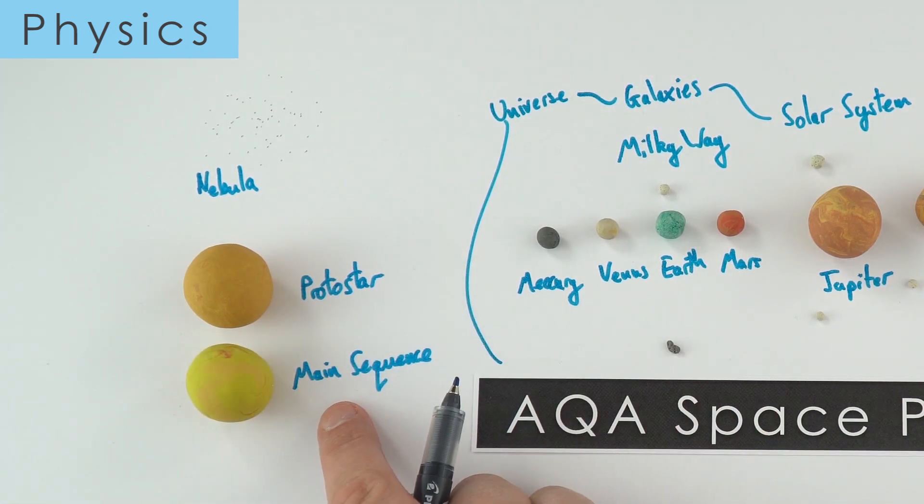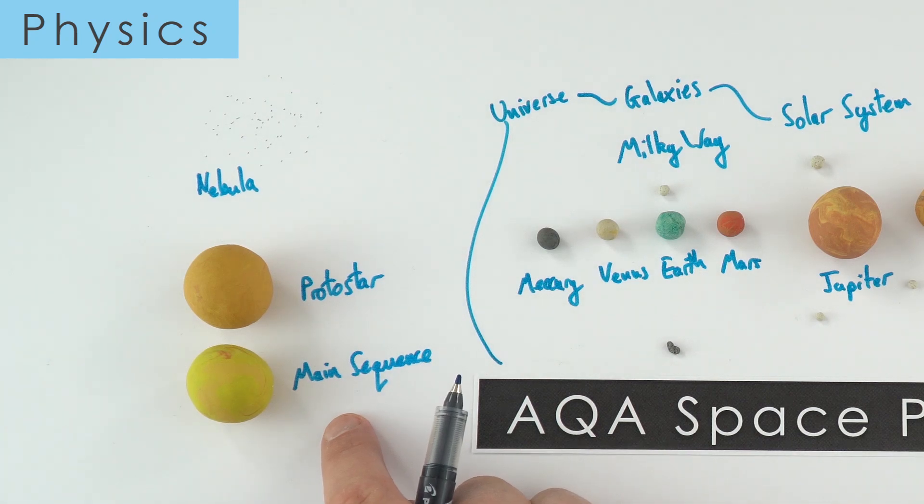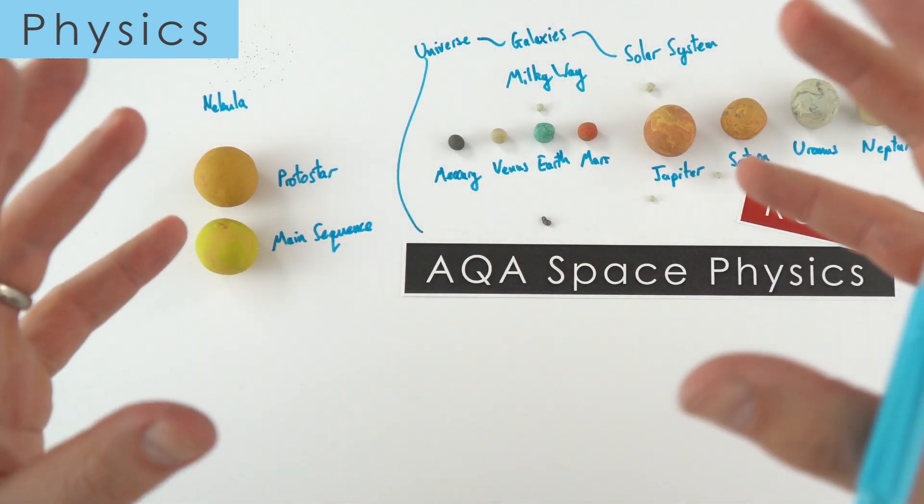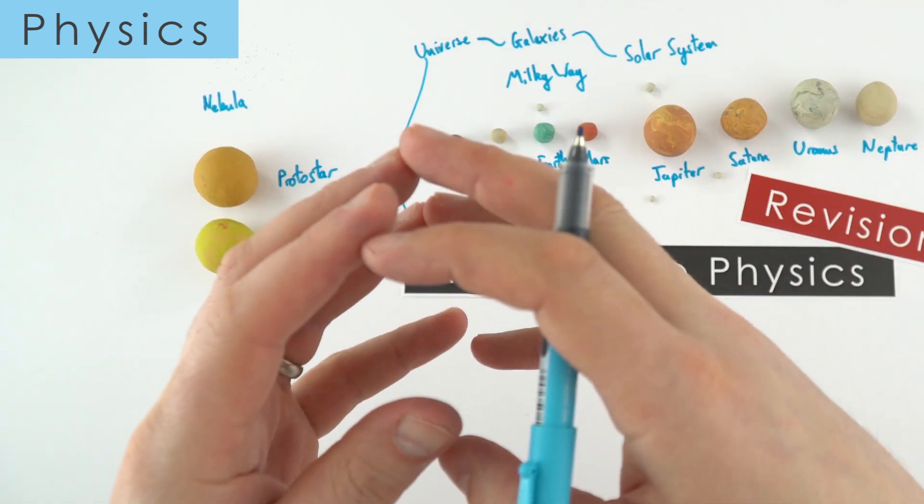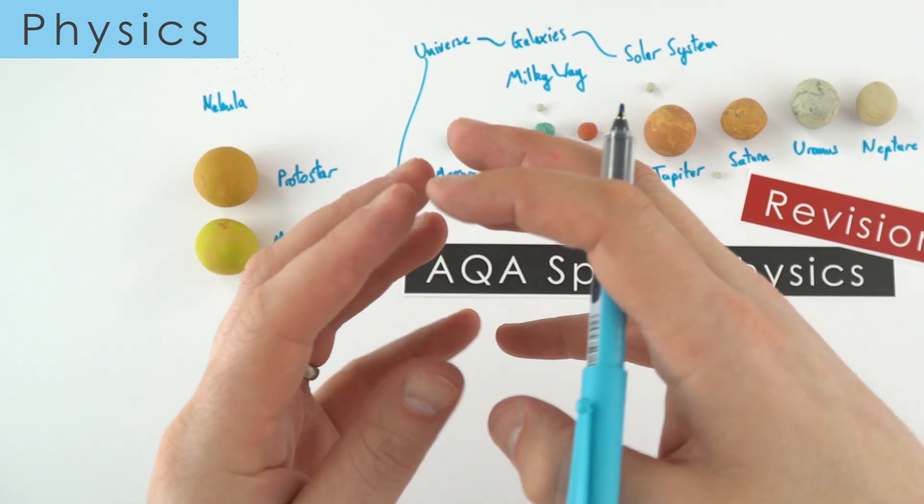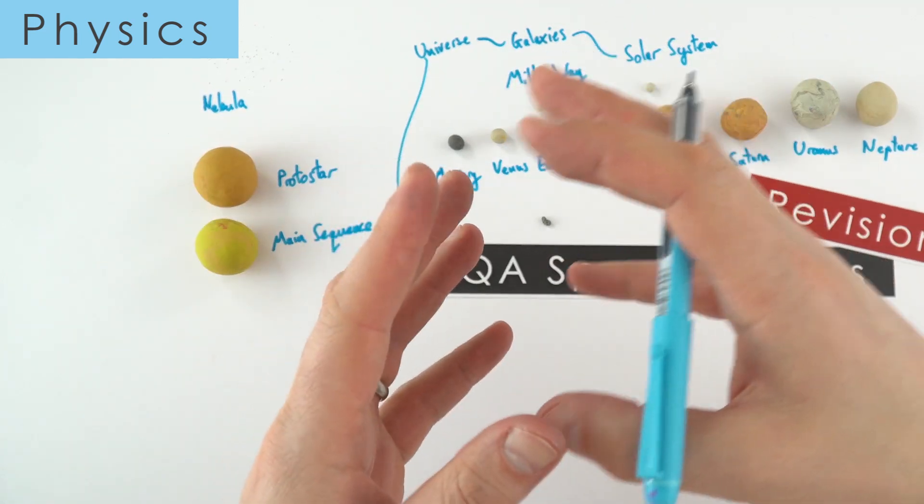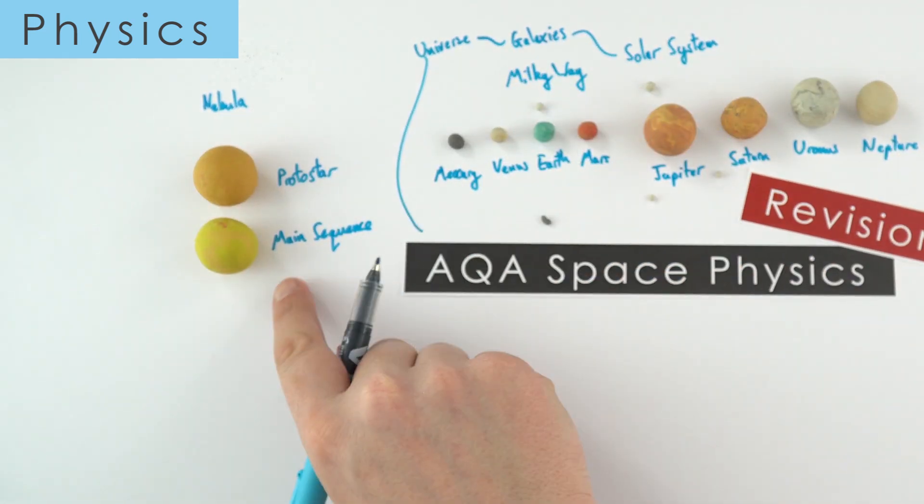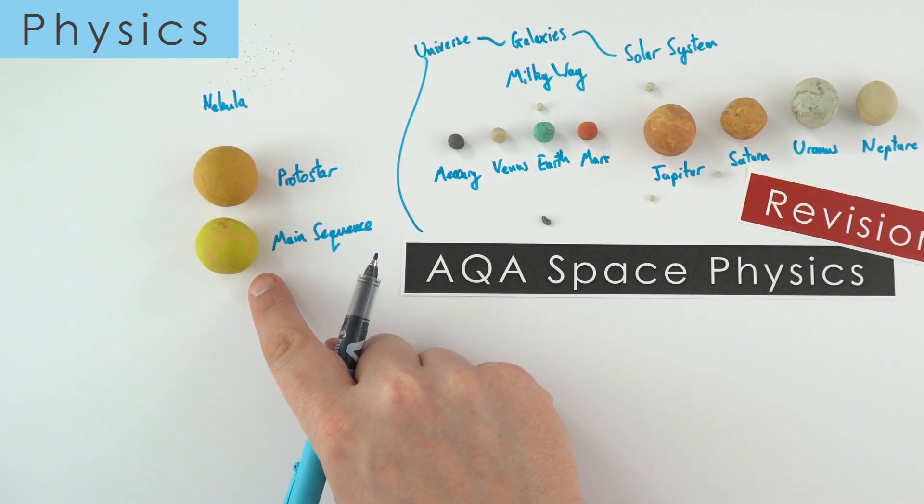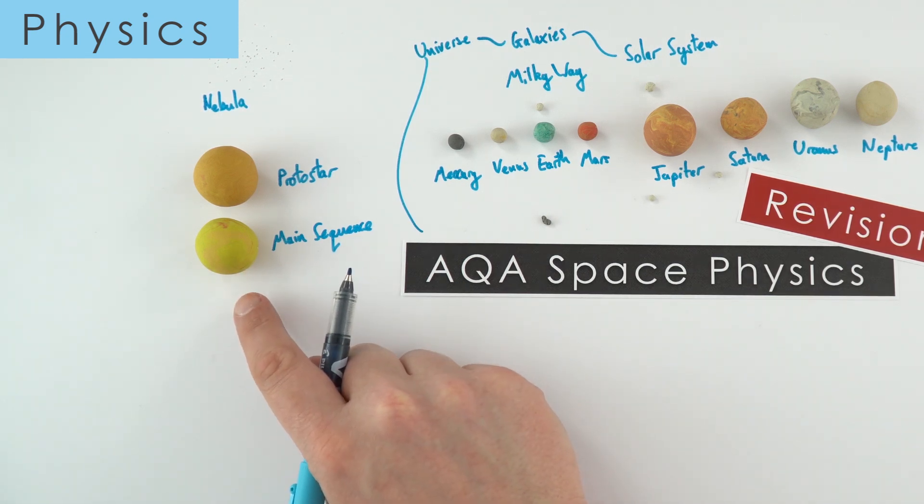This is basically where the star is in its stable phase. It's going to spend about 95% of its life there. Basically what you have is there's an equilibrium between the fact that gravity is pulling everything in and there's nuclear fusion happening which is pushing everything apart. This is where the star's in equilibrium, not getting bigger or smaller. That's the main sequence, and if we have a star a bit like our sun, a sort of low to medium mass star, that's where it's going to spend most of its life.